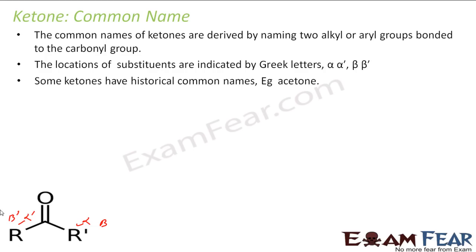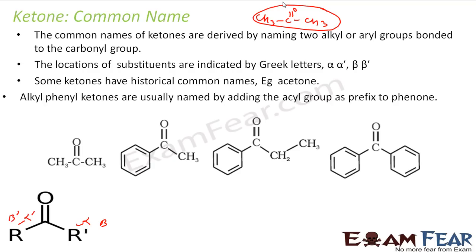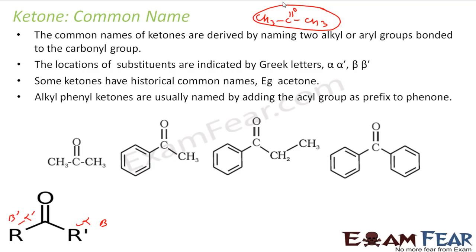Some ketones have a historical common name. For example, acetone — CH₃-CO-CH₃ — is called acetone and has a historical common name. Alkyl phenyl ketones are generally named by adding the acyl group as a prefix to 'phenone.' Please note: for alkyl phenyl ketones, we use this 'phenone' suffix.